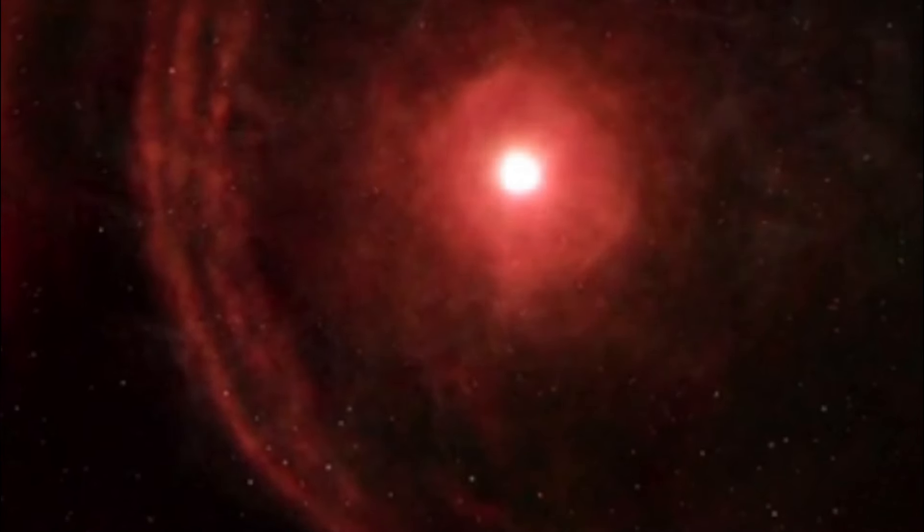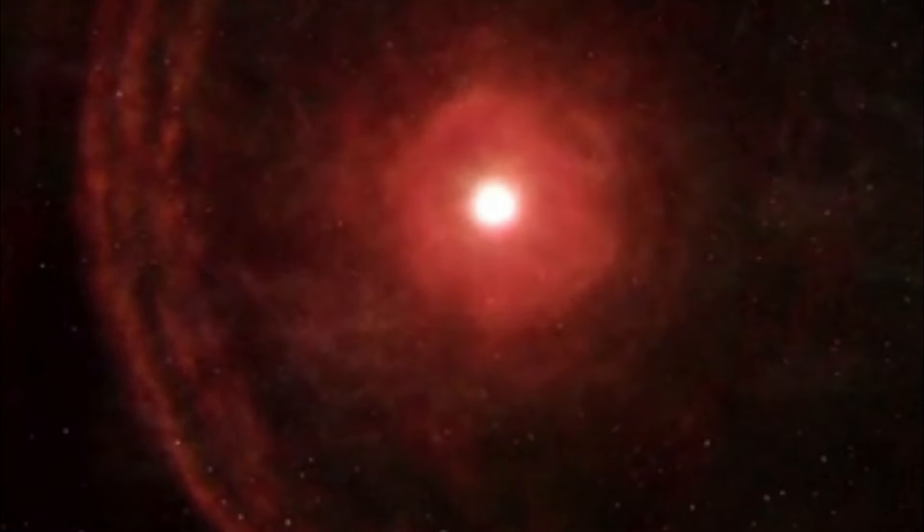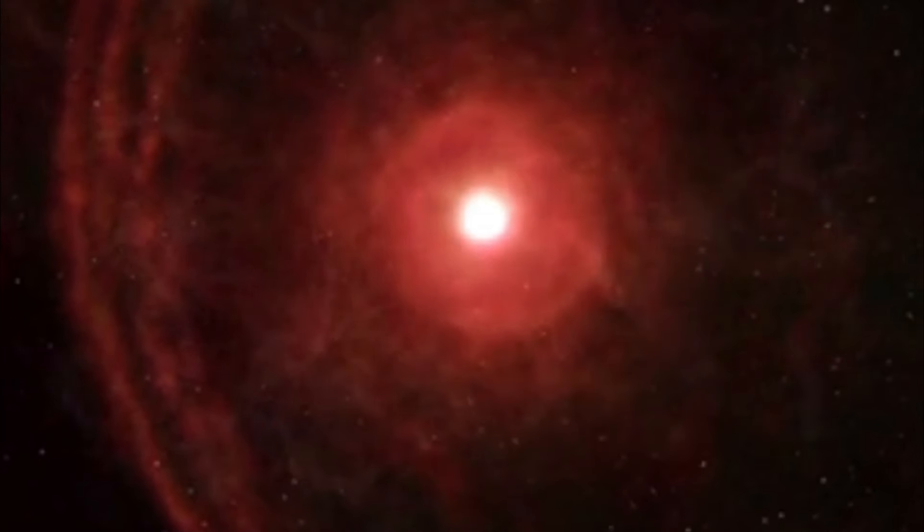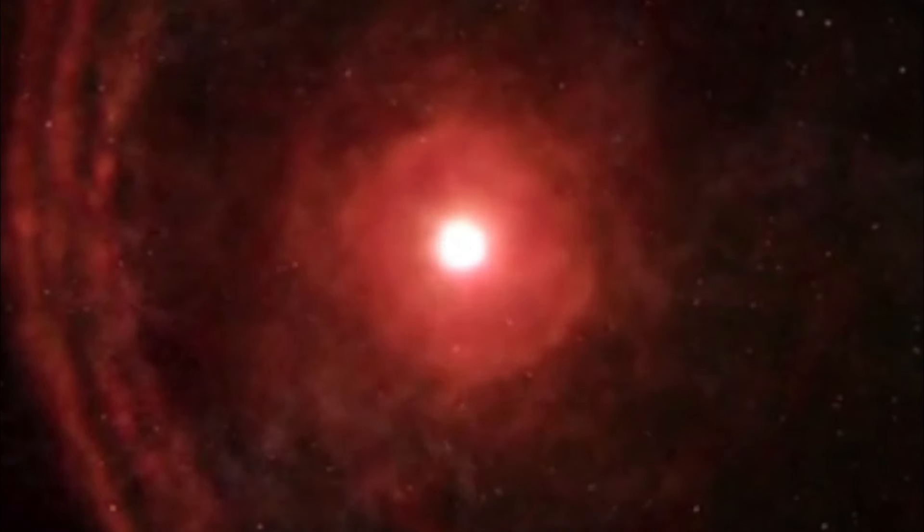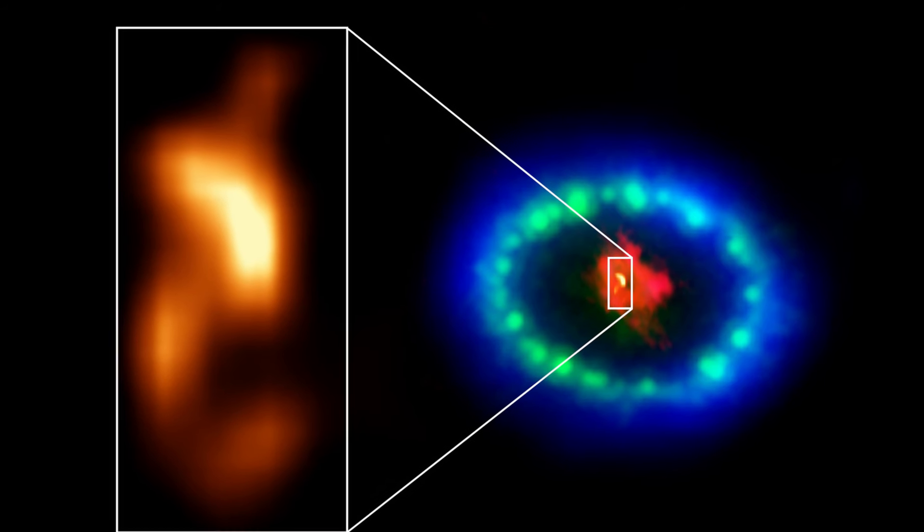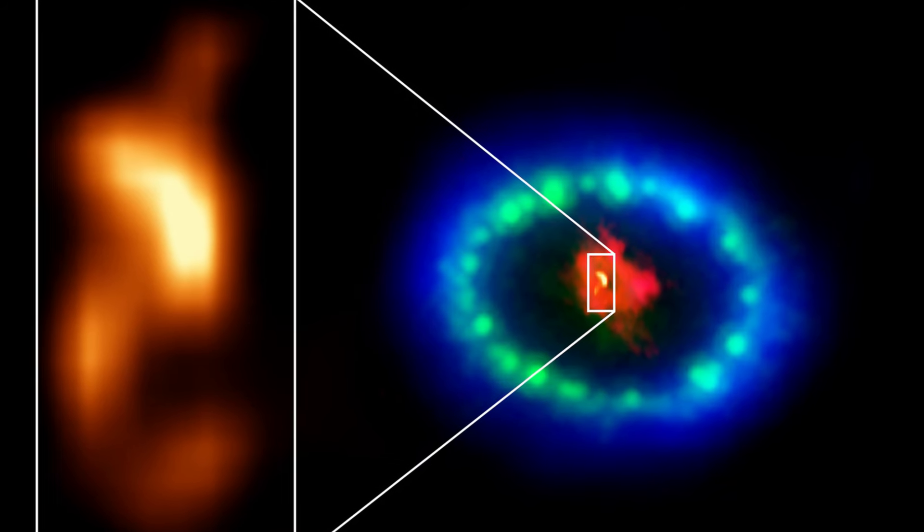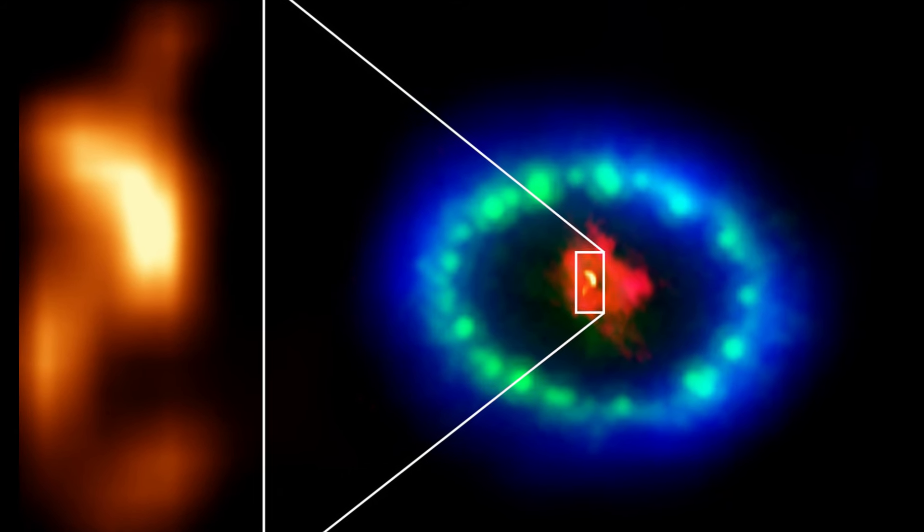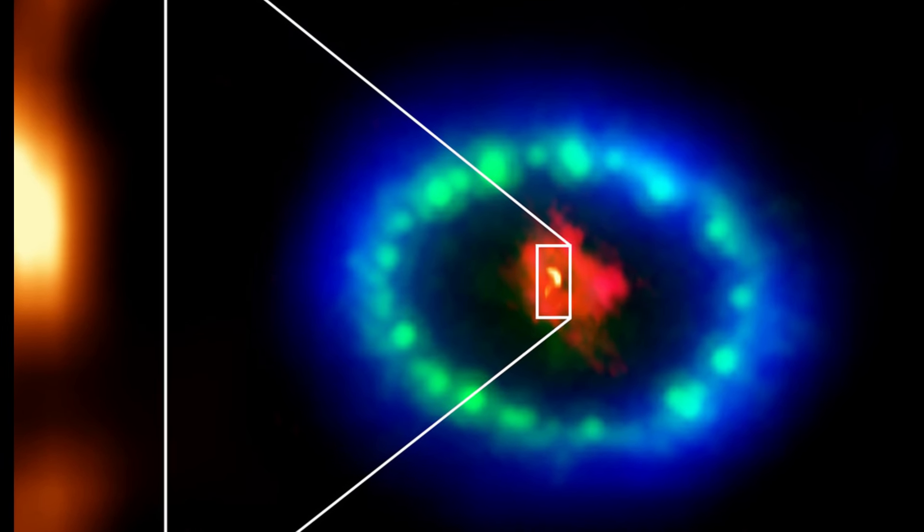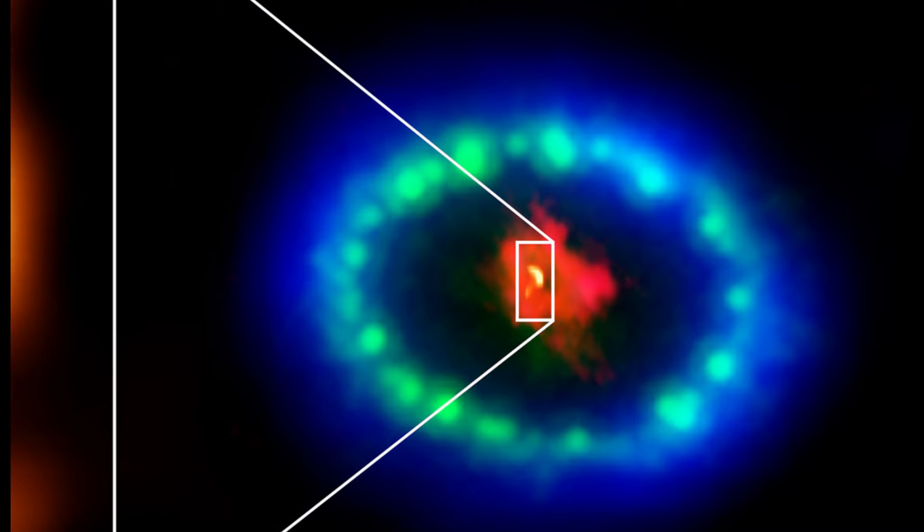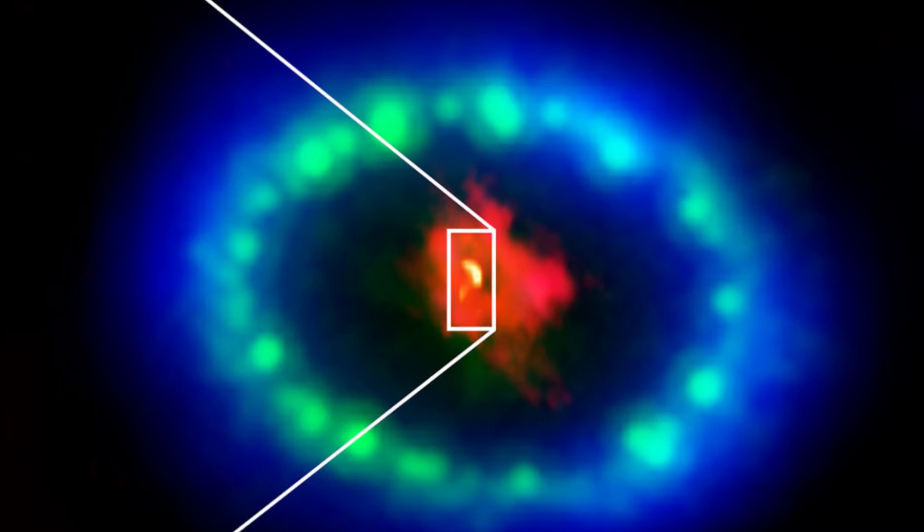Supernova SN 1987A occurred 160,000 light-years away in the Large Magellanic Cloud. It was first observed in February 1987, and following the life cycle of a typical supernova explosion, its brightness peaked a few months later in May. It has been consistently changing and evolving in the years since, providing astronomers a chance to witness a fascinating and important cosmological process in real time. It was the first supernova that could be seen from Earth with the naked eye since Kepler's supernova was observed in 1604.